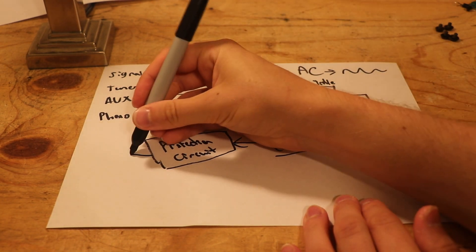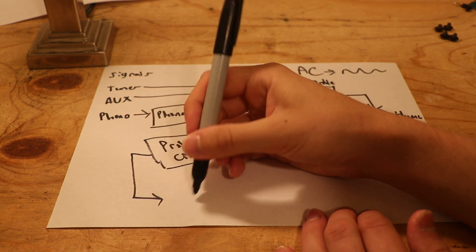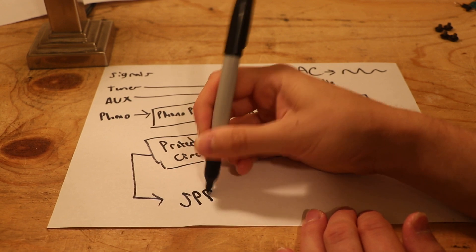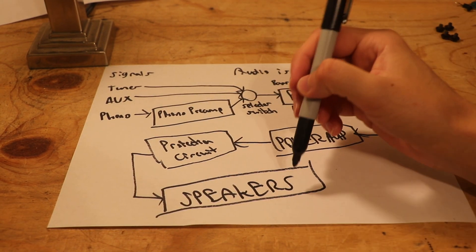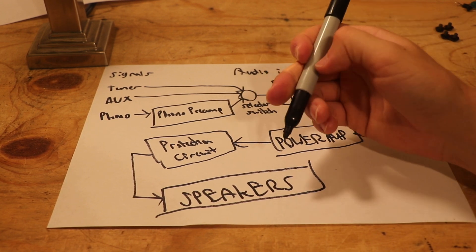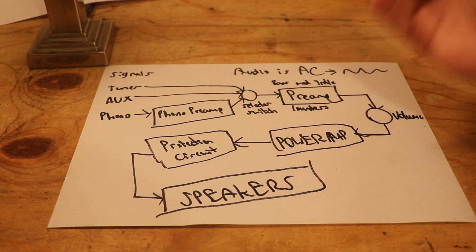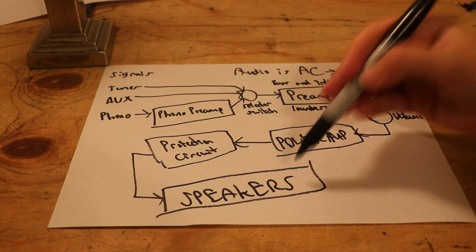And then, what finally happens is everything goes to your speakers, right here. And this can be whatever you want. It can be a Klipsch La Scala, it can be a Realistic Minimus 7, it can be whatever you want, obviously.